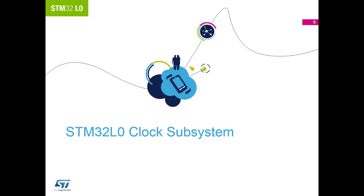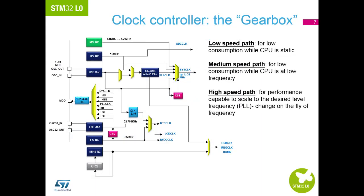Before we can look at the low power modes of the STM32L0, we need first to understand how all the elements of the device are clocked. The clock controller is the gearbox of the entire system. We have the low speed path driving peripherals that run whilst the CPU core is asleep, the medium speed path where current consumption is more important than performance, and finally a high speed path for when you need the full performance of the device.